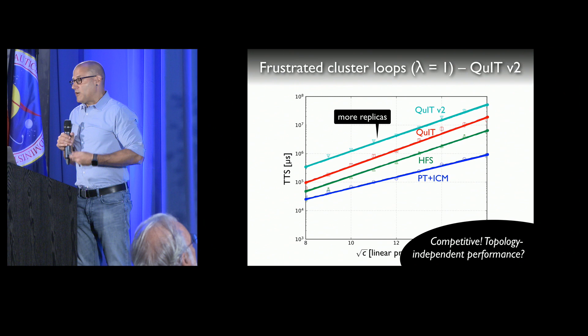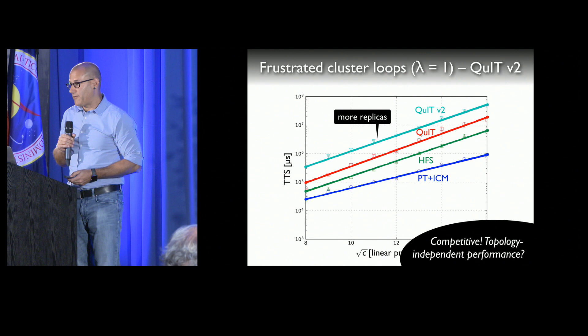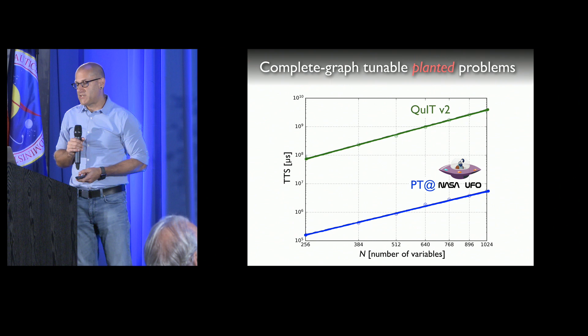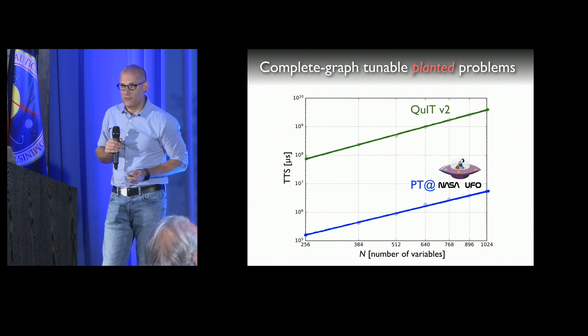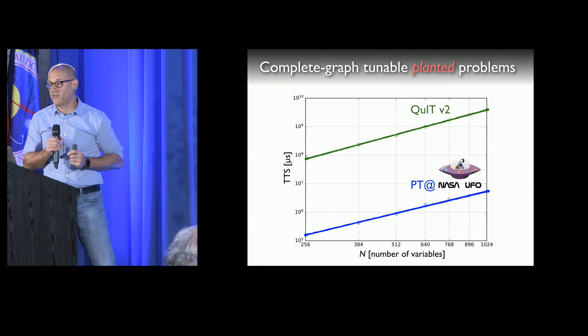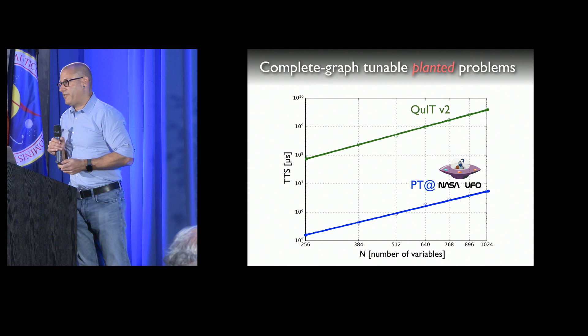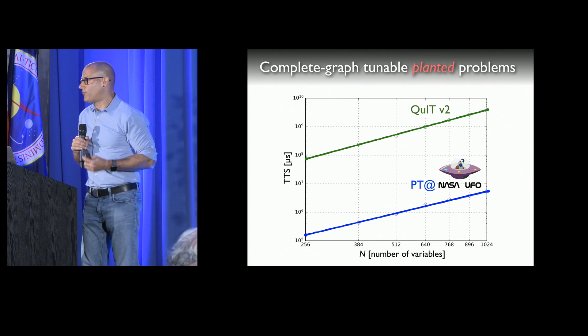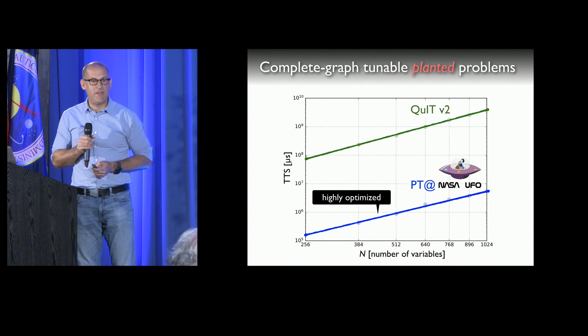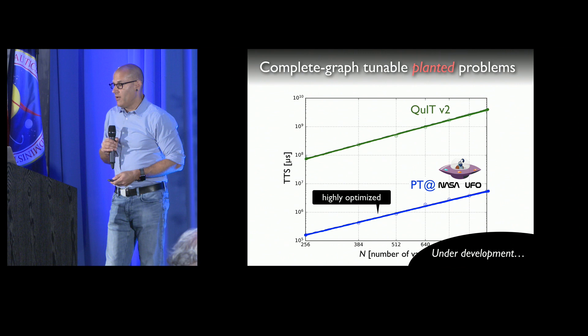What I'll show you next is extremely preliminary data — Chris got me this plot yesterday. You see the performance of QuIT versus parallel tempering at UFO, and the scaling is roughly the same. There is a very large offset, partly because one code is highly optimized and the other is not, plus we need to tune the parameters. The important thing is that the scaling performance is the same. We also used a new approach developed by Firas Hamze to plant solutions for complete graphs — so if anyone needs ground states for complete graphs, I can give you some.